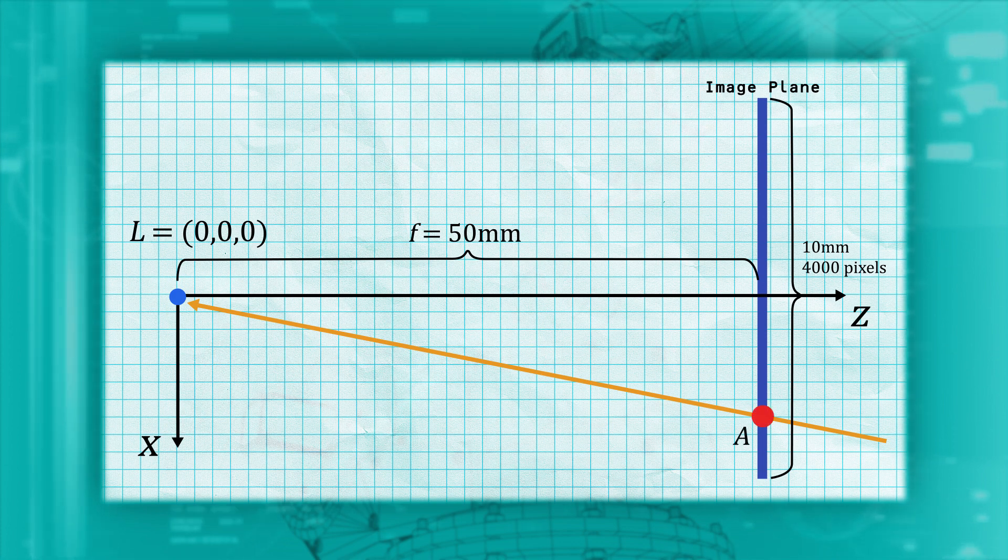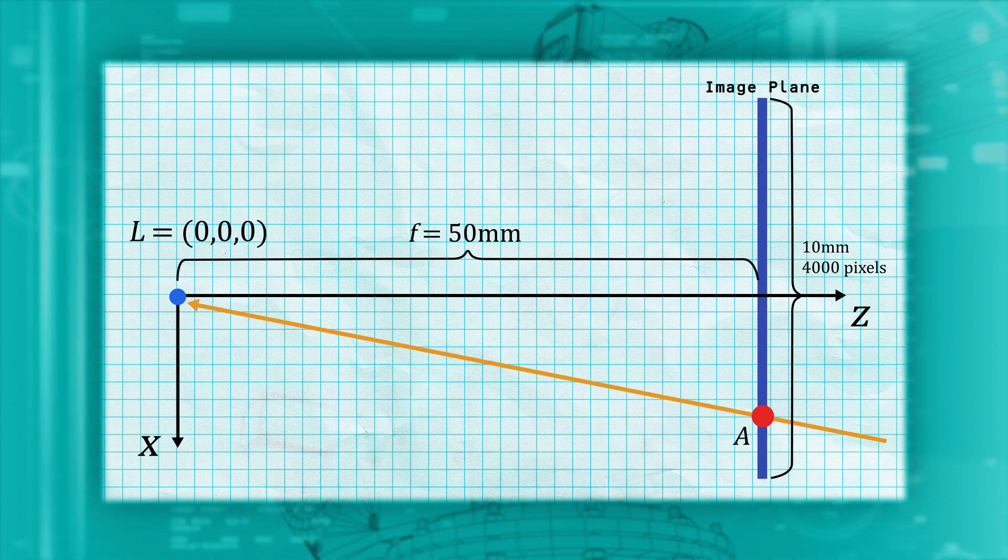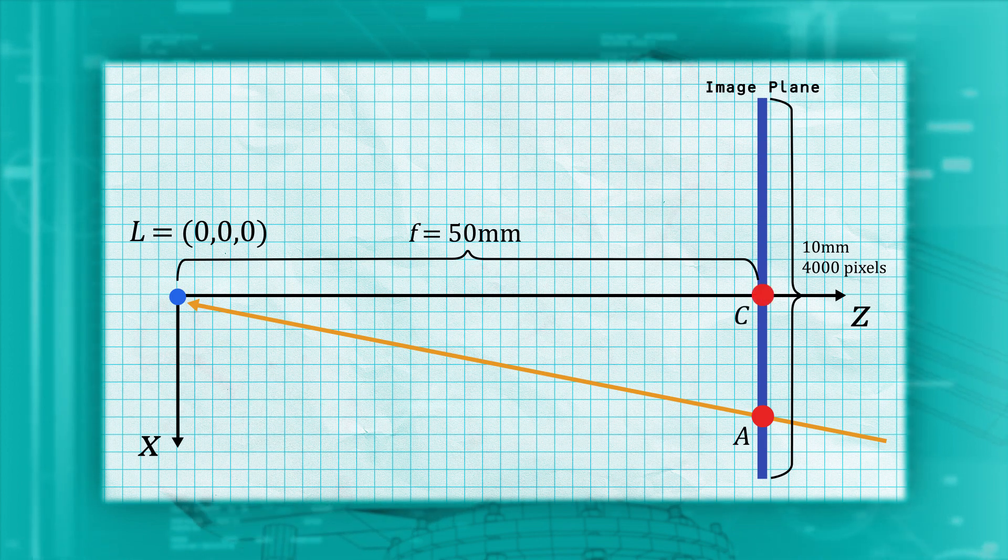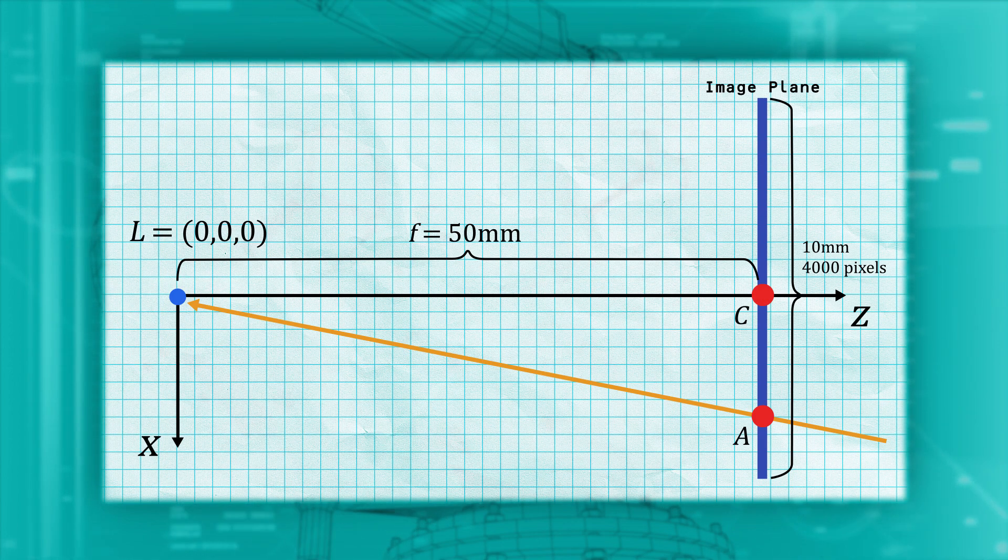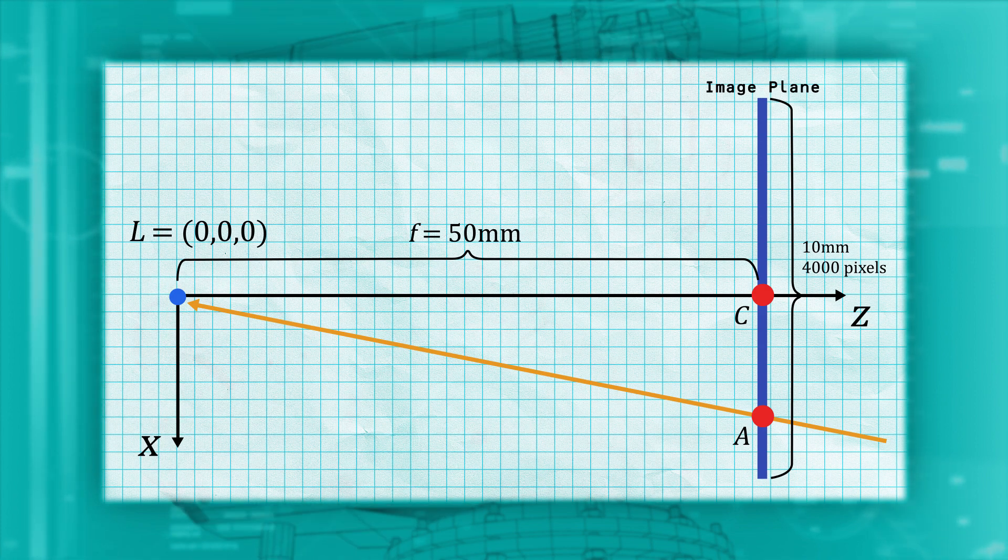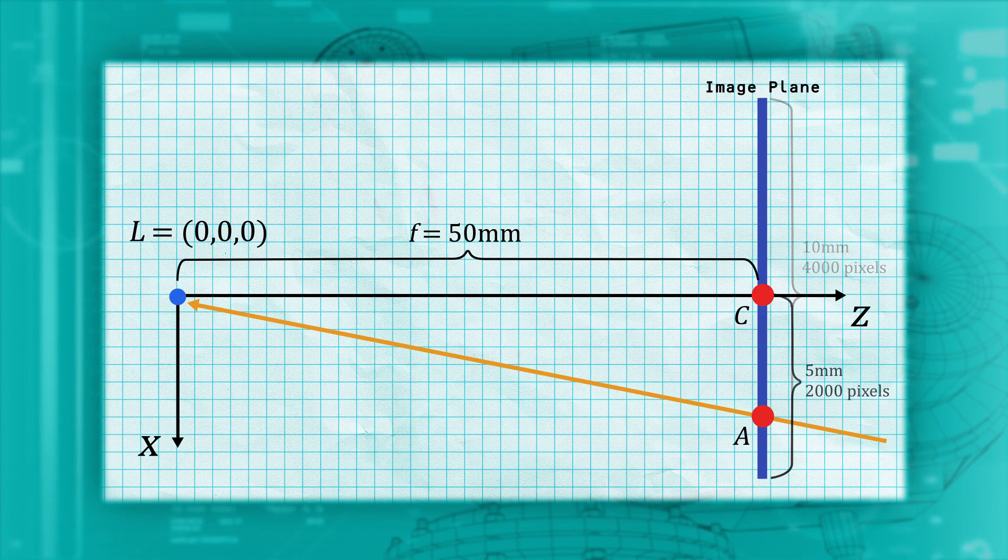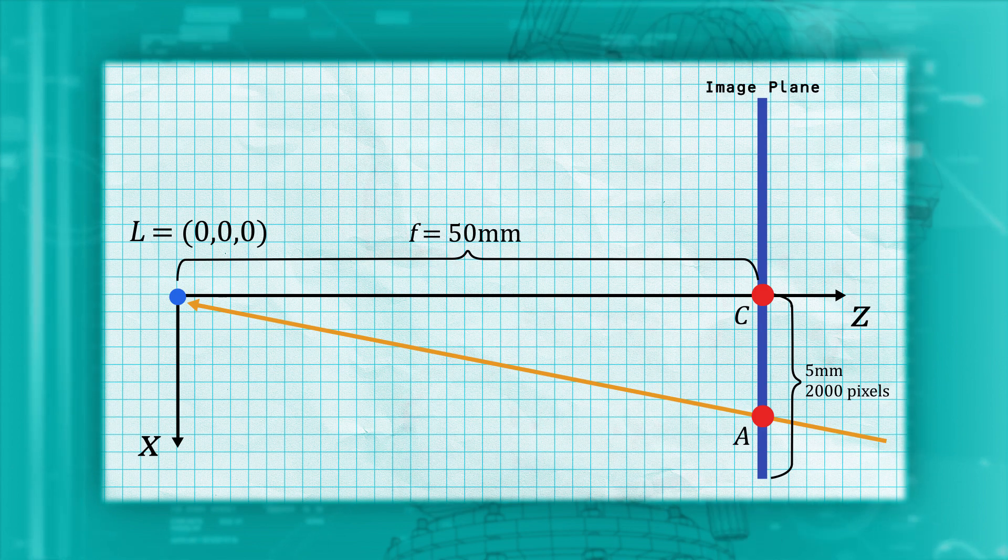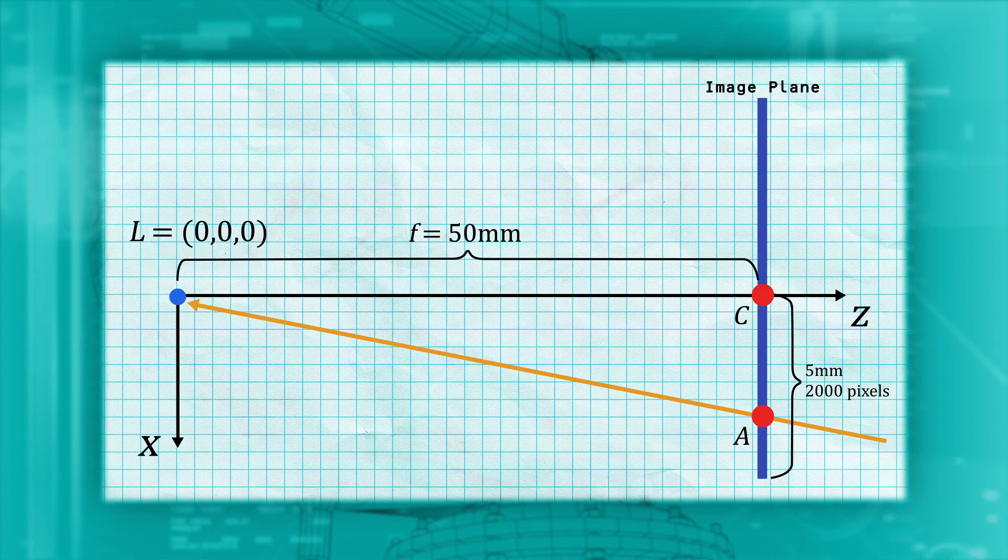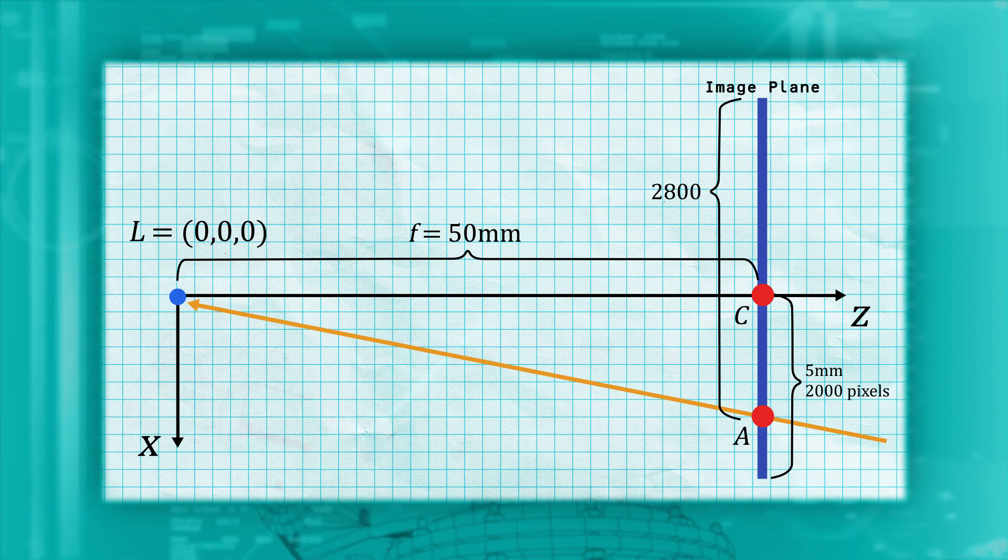We know that the Z axis goes through the middle of the image plane at point C, so the X coordinate of C is zero. We also know that since C is in the middle of the sensor, it is 2000 pixels from the right and left edge of the sensor. Let's say the feature we are looking at is at pixel 2800, meaning it is 800 pixels to the right of center.